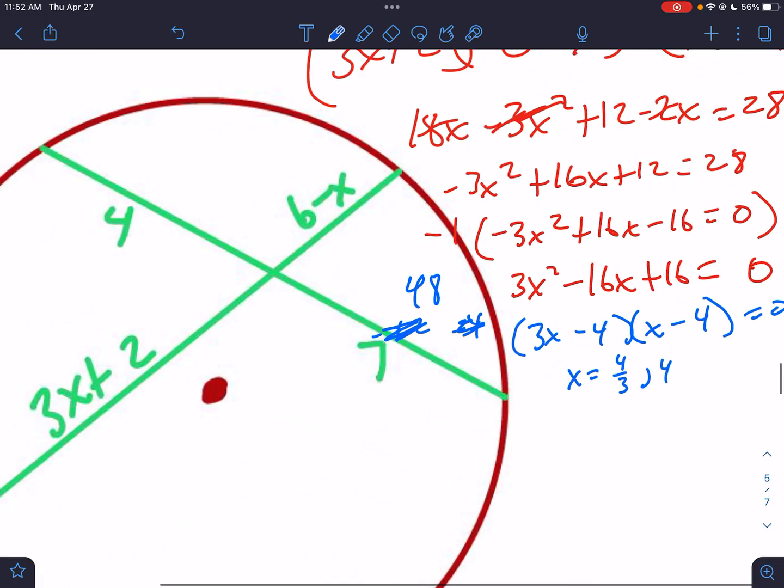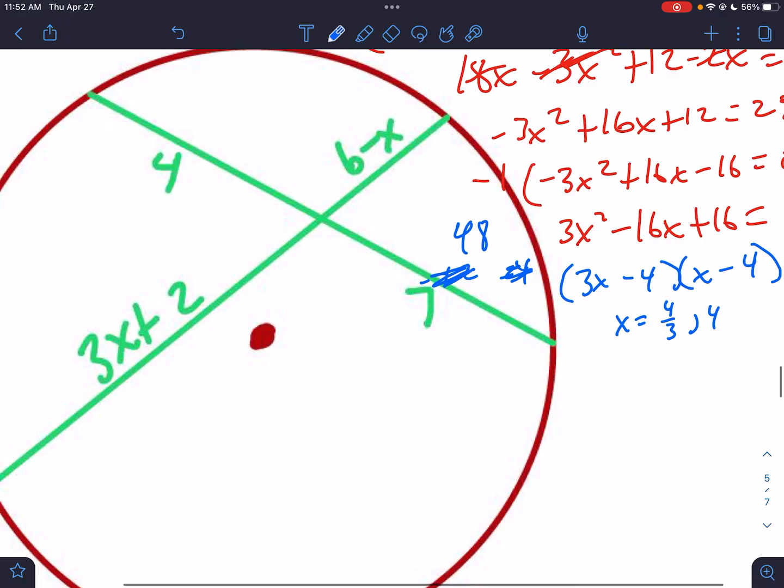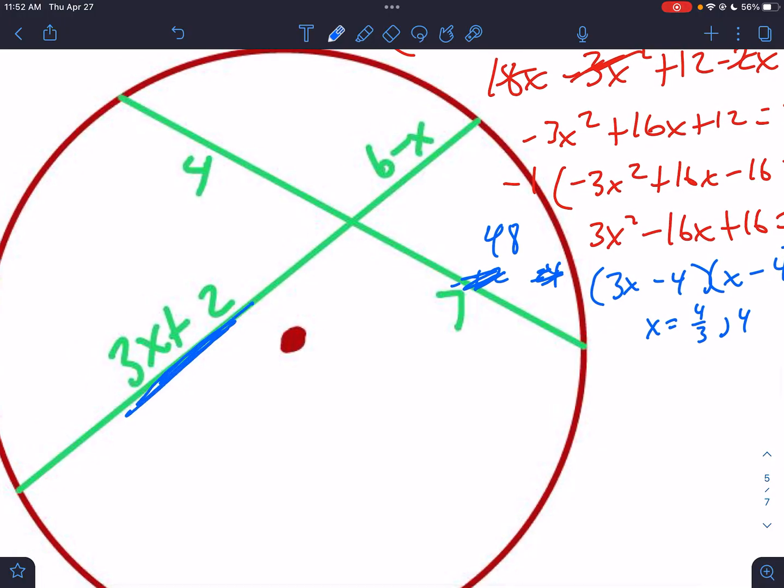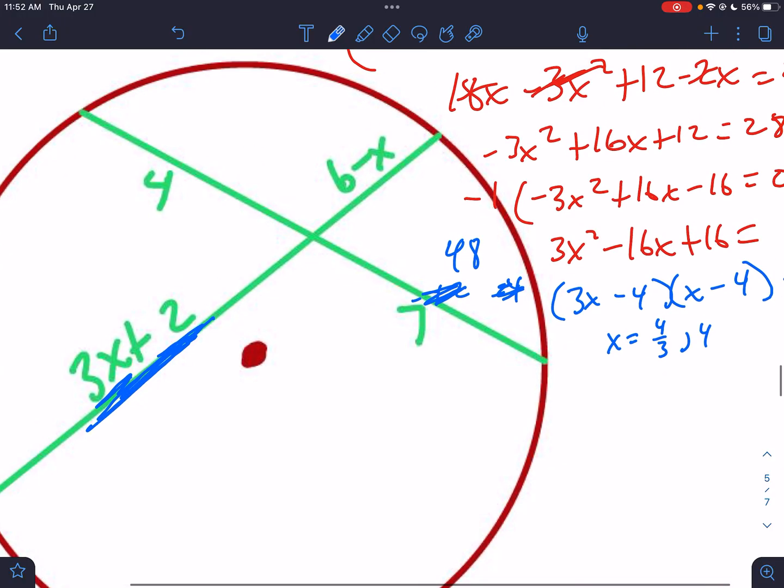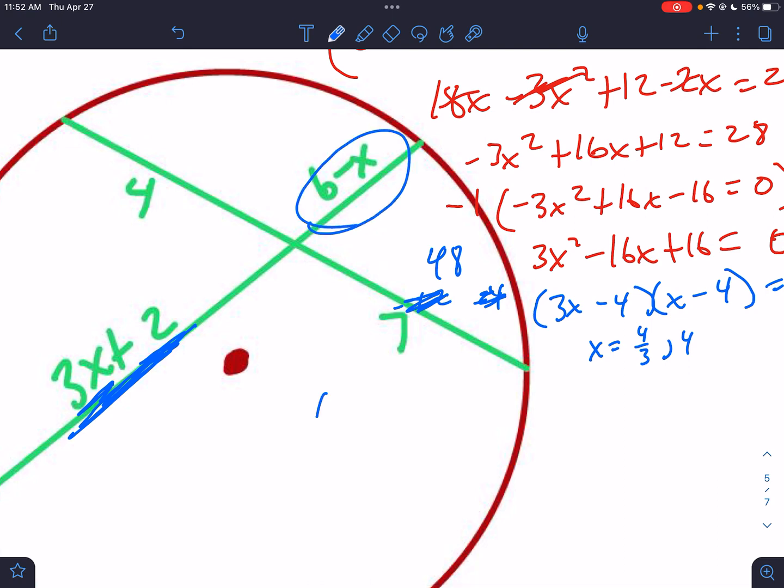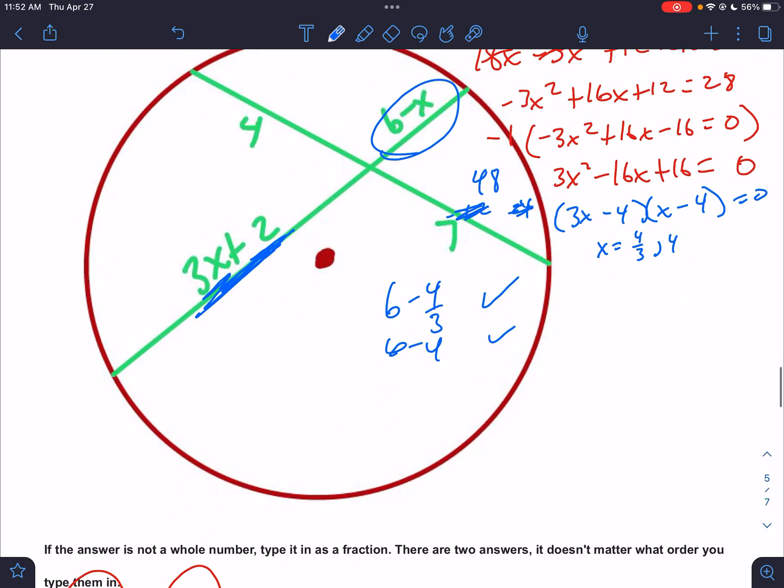We plug them in. Are either one of these going to be issues? They're both positive, so this will work for sure. This could be an issue: 6 minus 4/3, that's good, that's positive. 6 minus 4, that's good, that's positive. So they both work. Both answers are in fact correct, so we need them both.